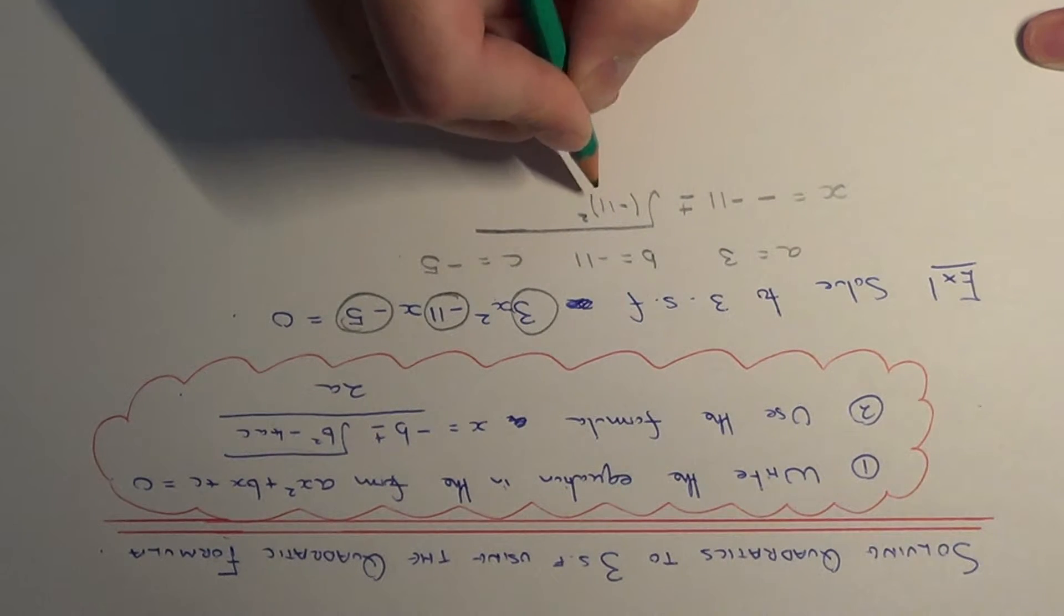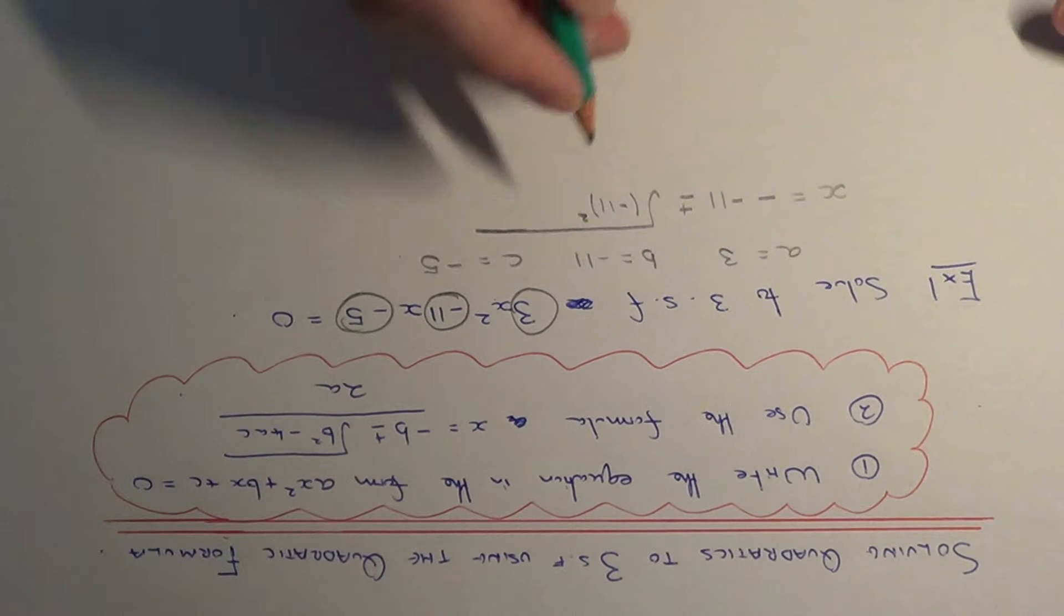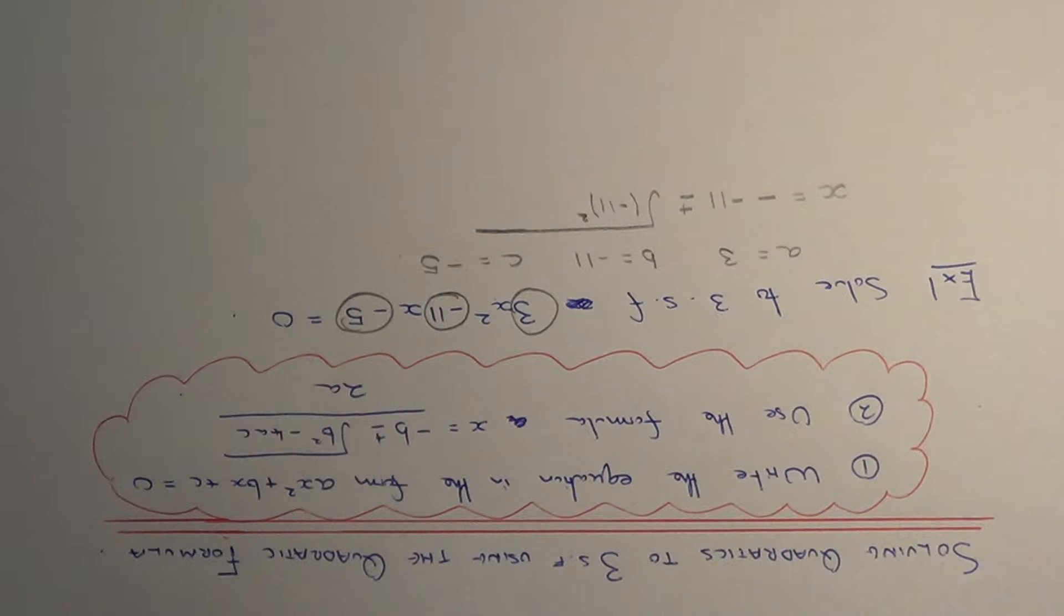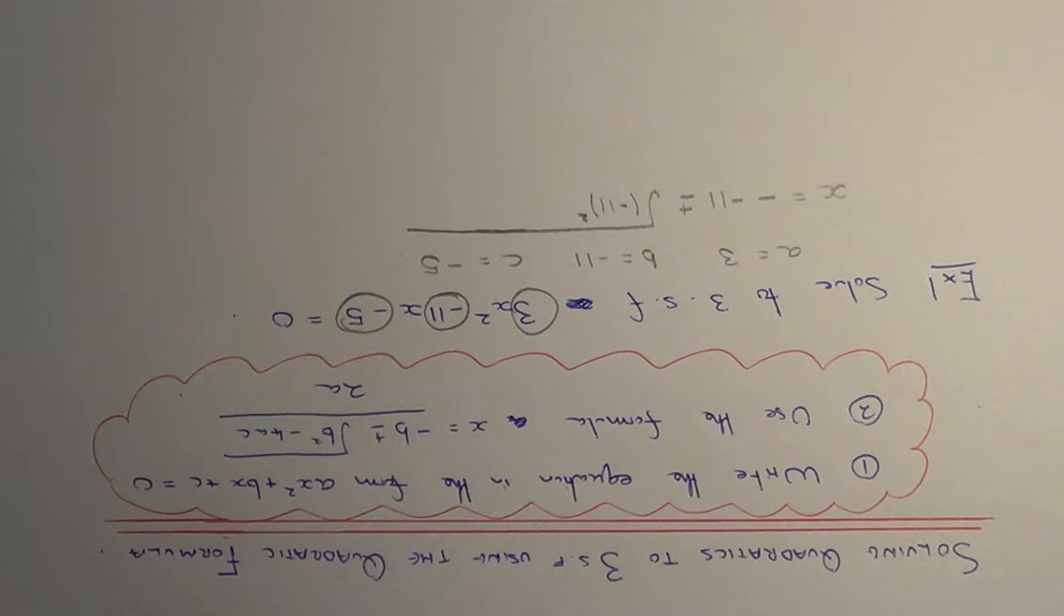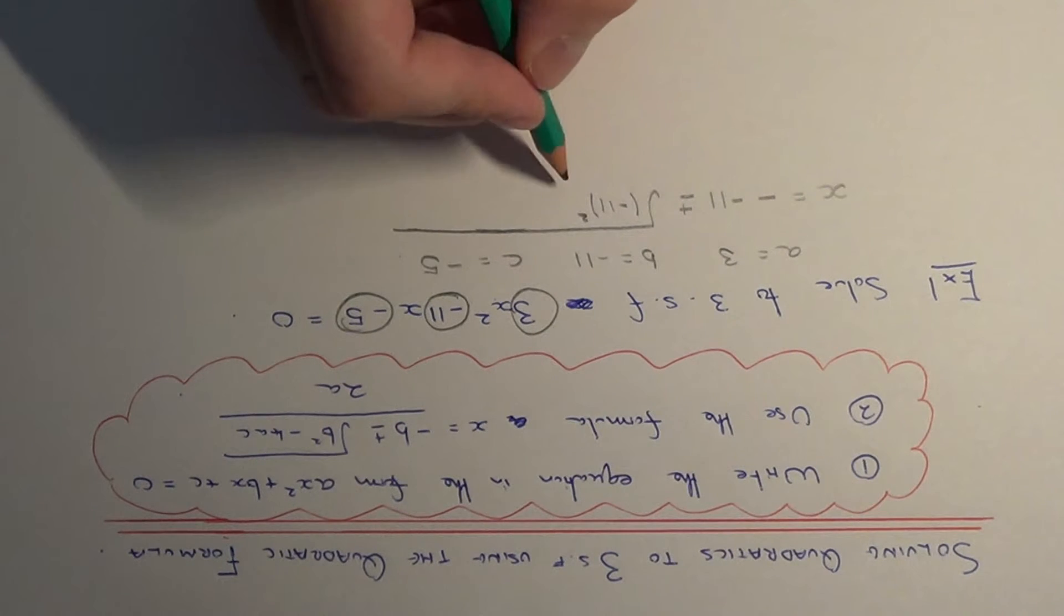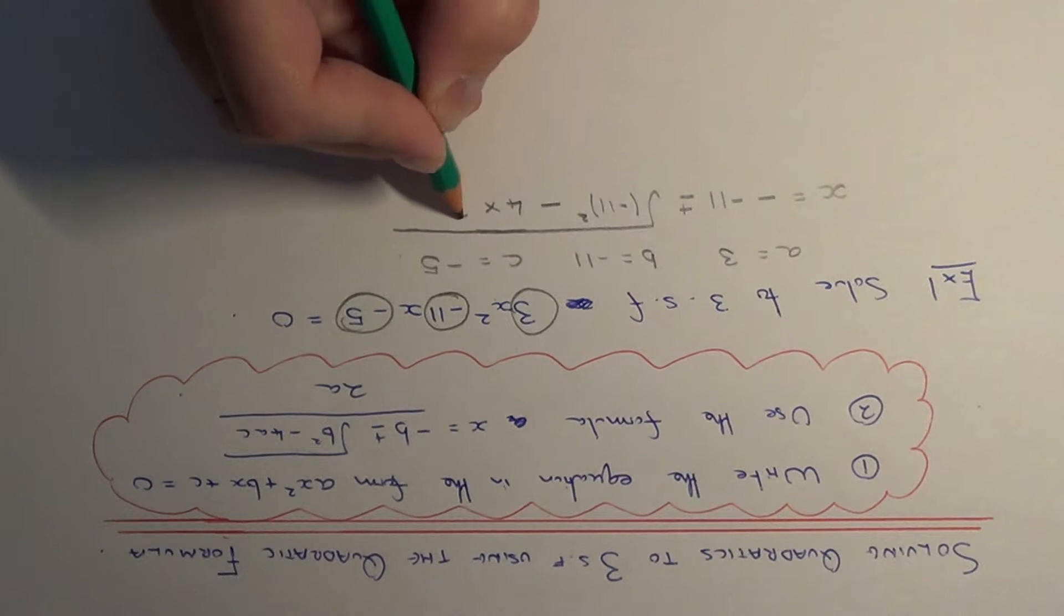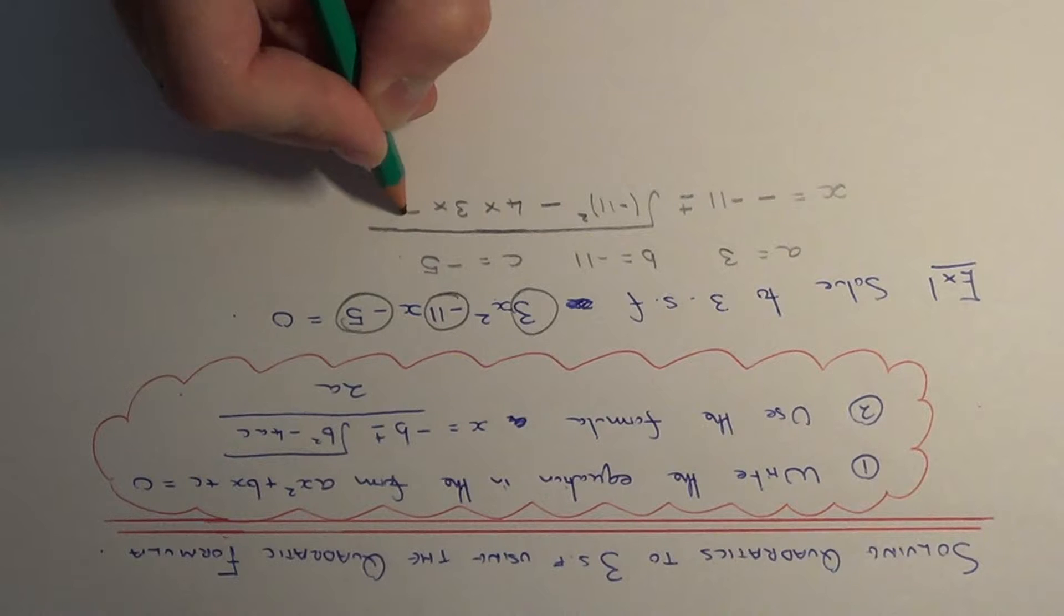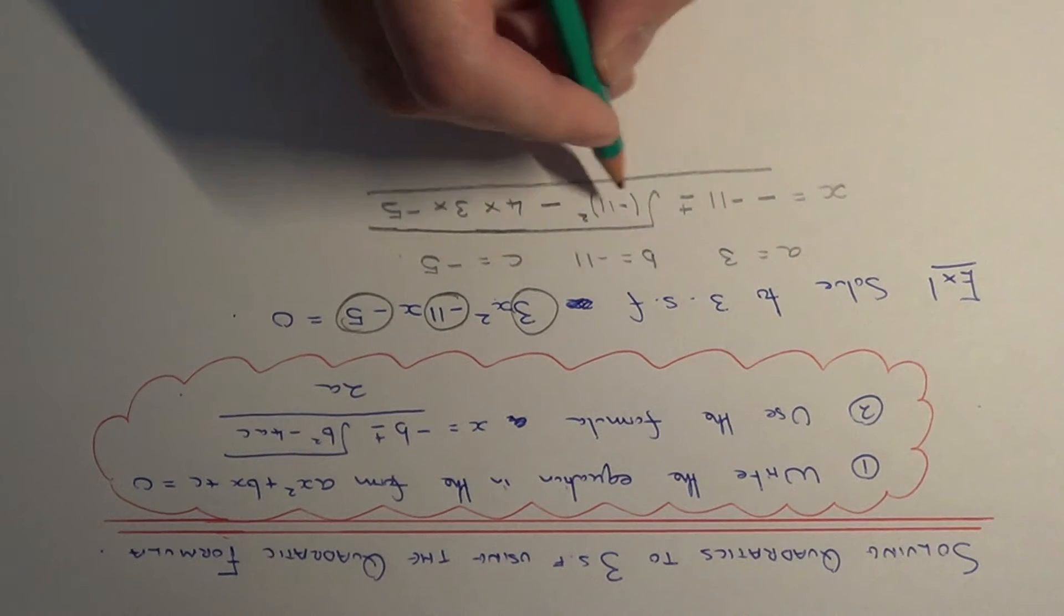Make sure you put the number in a bracket here because when you square a negative number on your calculator it won't come out right - it'll give you a negative answer instead of a positive answer. So then it's minus 4 times a times c, all over 2 times a.